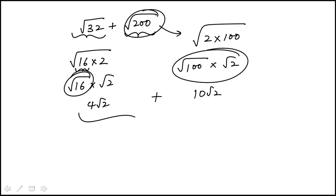And now I have to add these two. So that's 10 plus 4. This is 14 root 2, which is choice B.